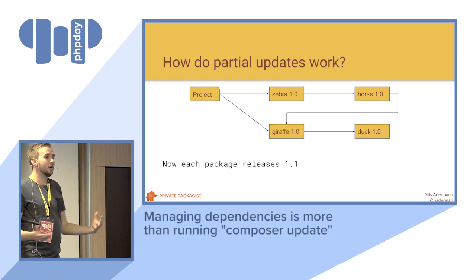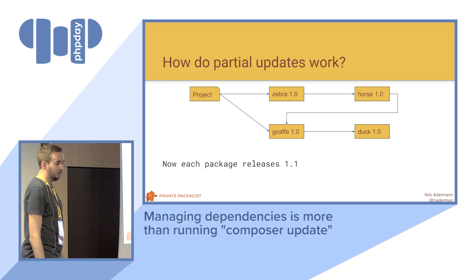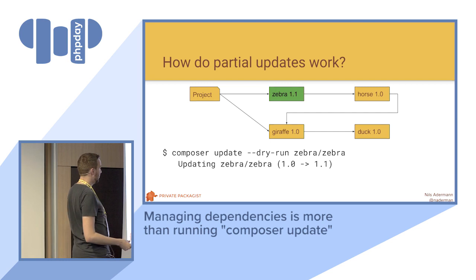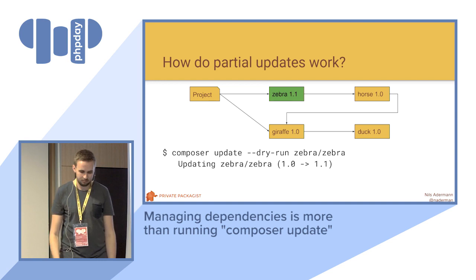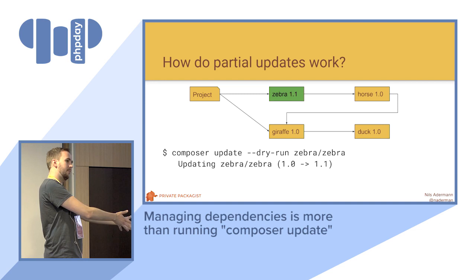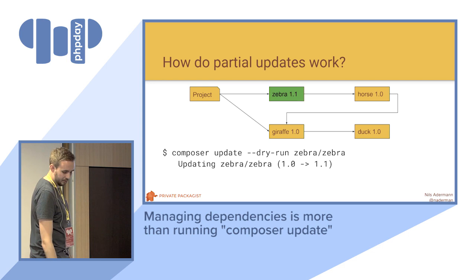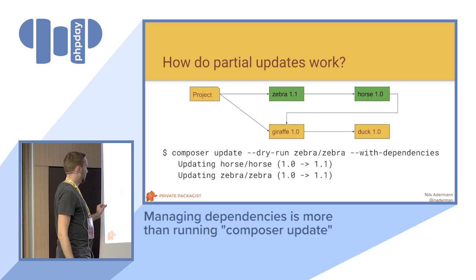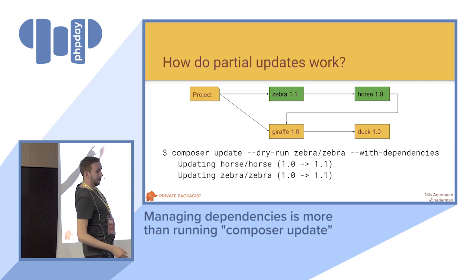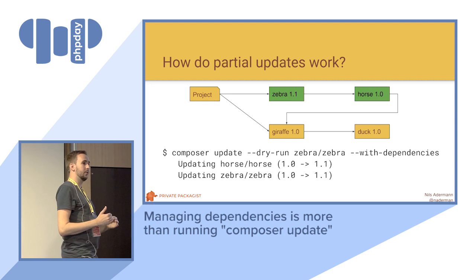We have version 1.0 of each of these packages and they all release version 1.1. We want to update our application starting with Zebra. You can run a composer update with dry-run on Zebra, and this will really only update that one package from 1.0 to 1.1. However, Horse isn't something I specifically installed as a dependency, but it's something that Zebra depends on, so you probably want to update that at the same time. If you add the --with-dependencies flag in the composer update, it'll update Horse too. However, it's not updating Giraffe, because Giraffe is a dependency declared in my own project's composer.json.